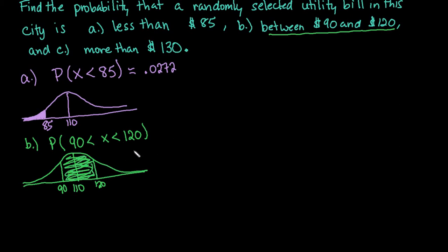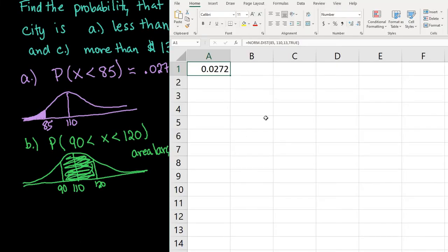With Excel, when finding area in between, you do the area of the larger value minus the area of the smaller value. We'll use the same NORM.DIST function, just enter it twice.